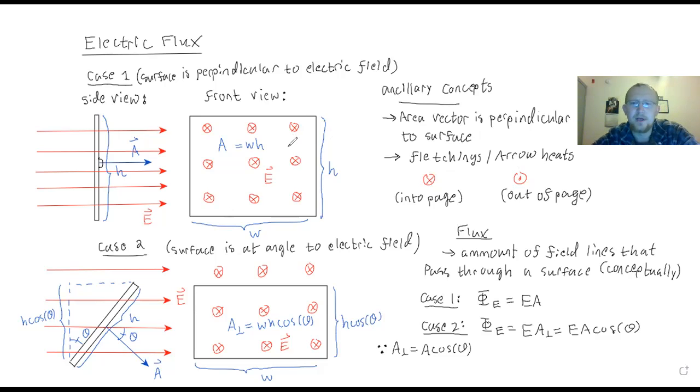All right. So the idea of flux, as you can see written down here, is it's essentially the amount of field lines that pass through a surface, any given surface. And that's kind of a conceptual way to look at it. Remember, field lines aren't real per se. It's just our model. And so as you can see in case one, the surface or the plane in this case is perpendicular to the electric field lines.